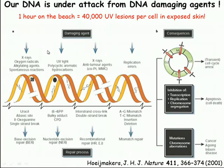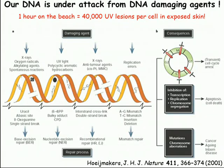Apart from external agents, cellular metabolism produces byproducts such as free oxygen radicals, causing oxidative base damage such as 8-oxoguanine, which are repaired by base excision repair. Another endogenous source is DNA replication itself. Although replication generally occurs with high fidelity, mistakes occur in the form of base pair mismatches or insertions and deletions due to replication errors during S phase, and these are repaired by mismatch repair.